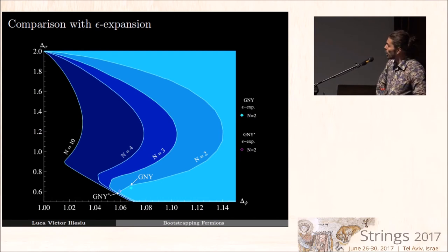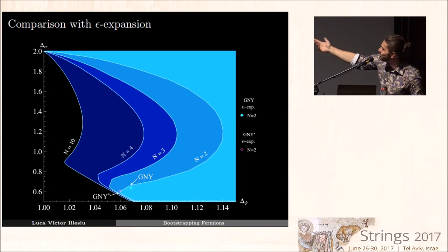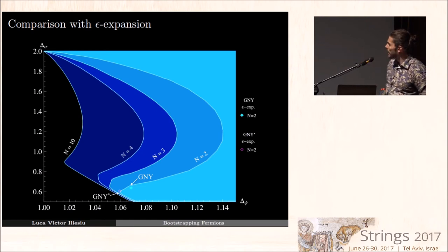However, in the case of the Gross-Neveu-Yukawa model, for small values of N, if one computes the scaling dimensions in the epsilon expansion, one finds that for the second solution, for which the quartic coupling is negative, the dimensions actually appear to be unitary. And that's what's predicted by the purple diamond shape. You see, that's very close to the kink over there. So that's most likely a new CFT that only exists for small values of N that is either unitary or very close to being unitary, so close that the numerical bootstrap cannot distinguish it.